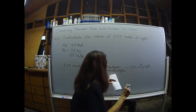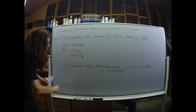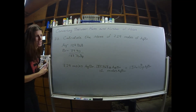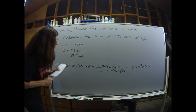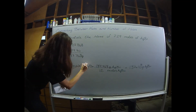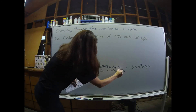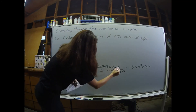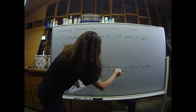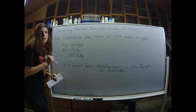I just want to check that the units canceled properly — we should always go through that. Moles of silver bromide canceled with moles of silver bromide, and we're left with grams of silver bromide.